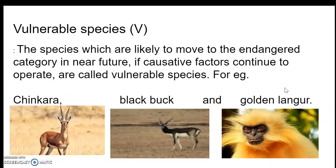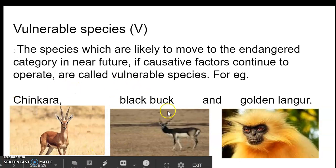The second category is vulnerable species. Vulnerable species are those whose population is declining, and if the negative factors continue, they will move into the endangered category. Vulnerable species have a lower population than endangered species. Examples include chinkara, blackbuck, and golden langur.